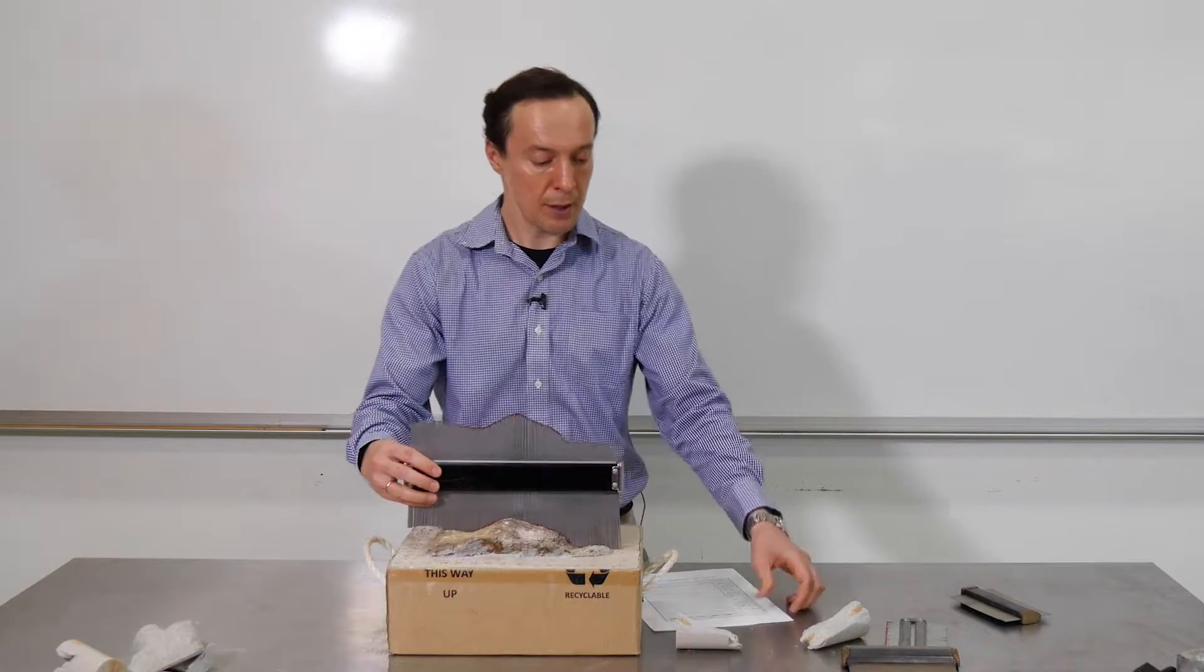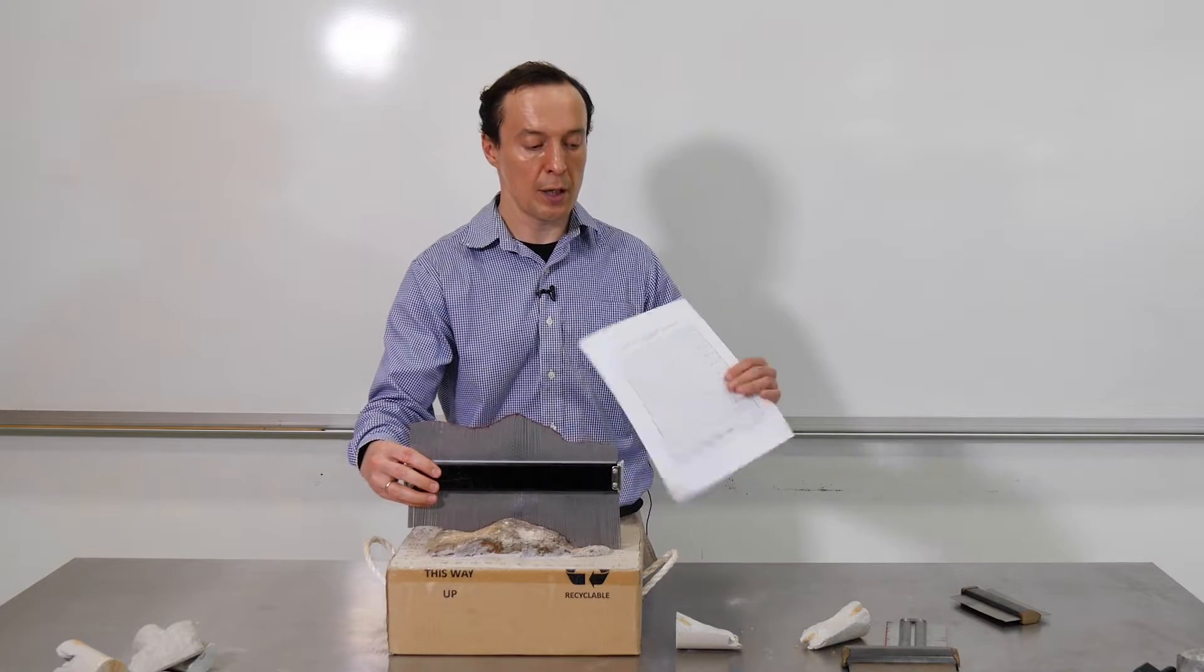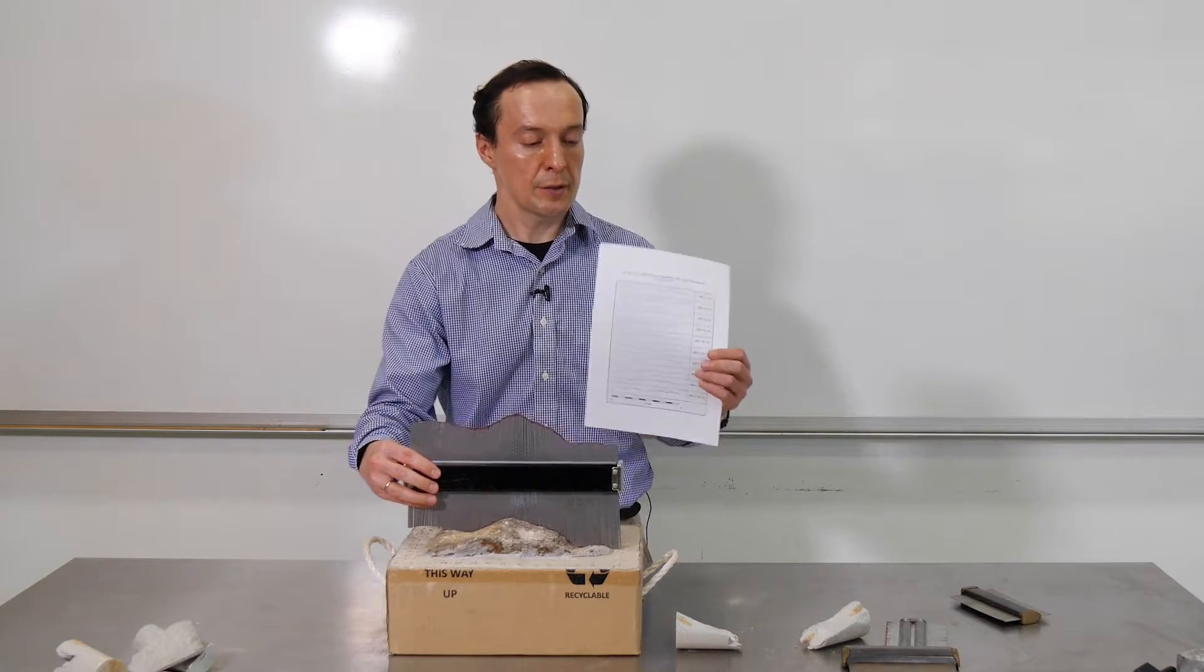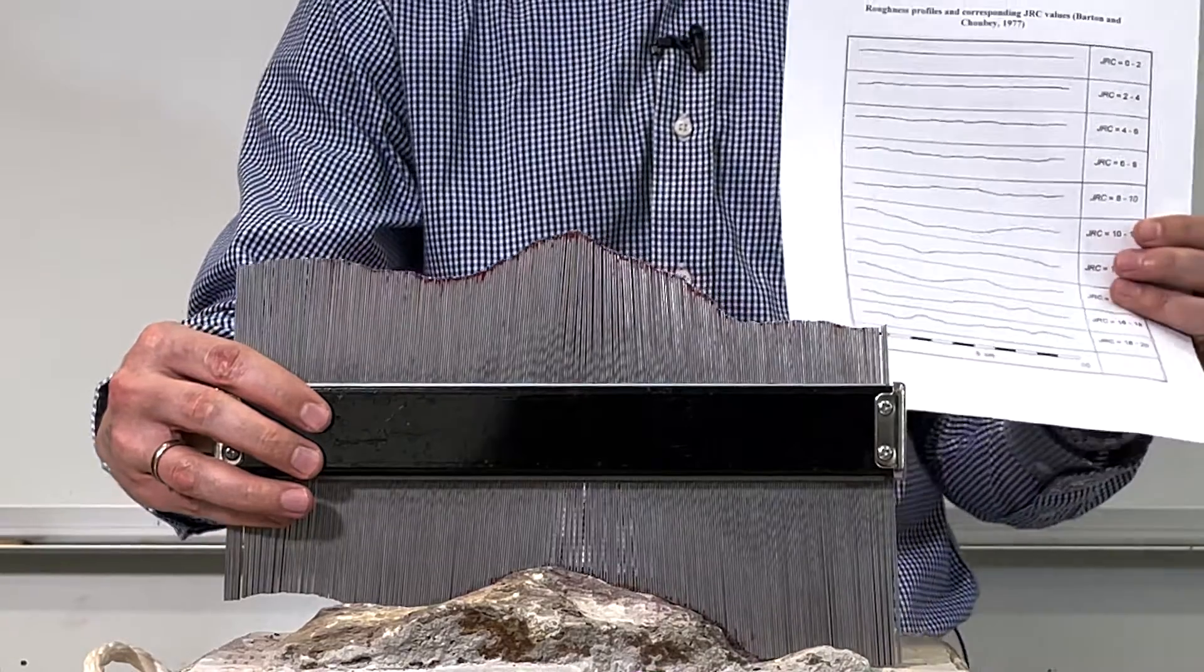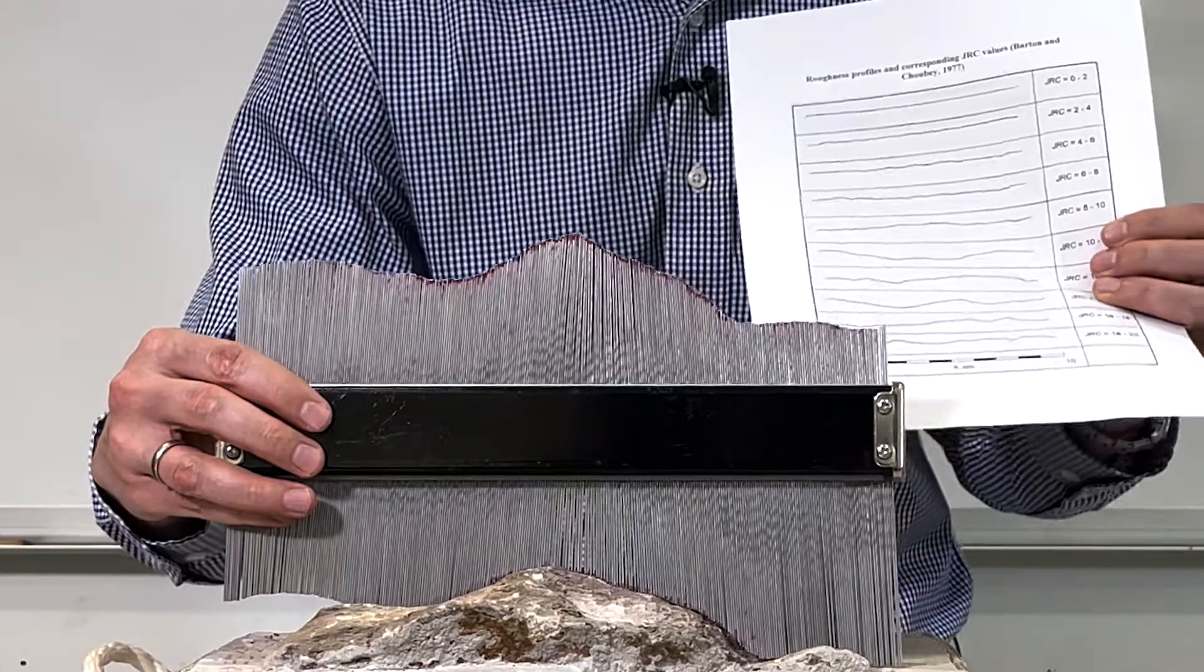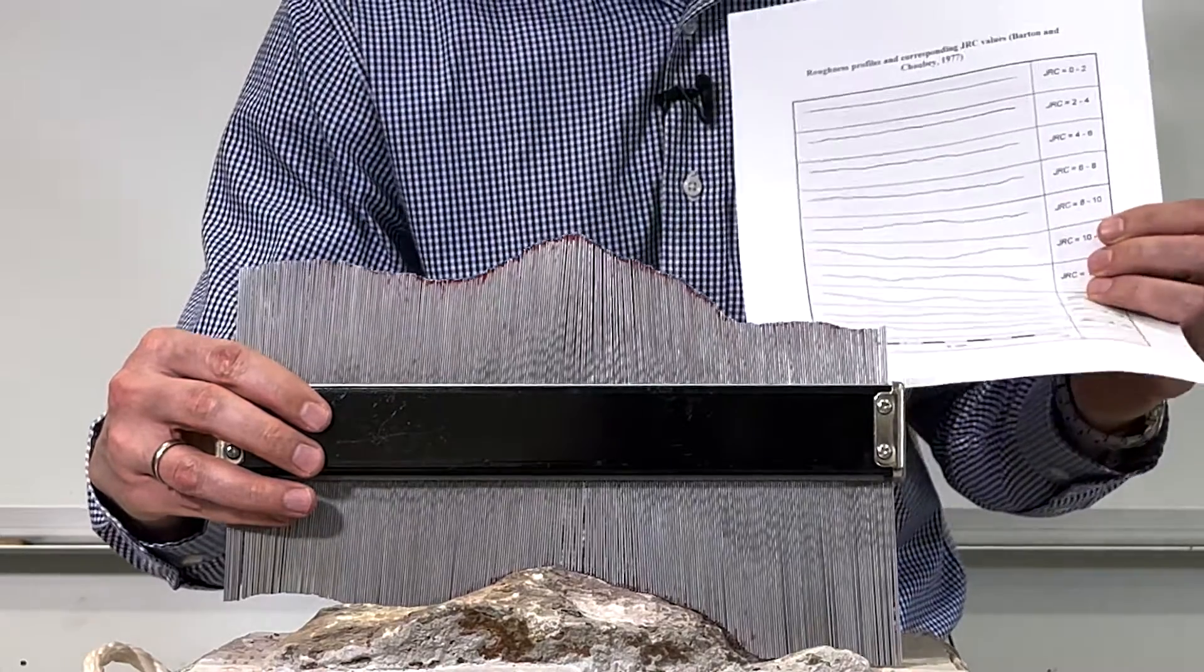What we'll do next is we're going to use this aid. So we have different surfaces with different JRC numbers. We will need to estimate which one our surface looks like.